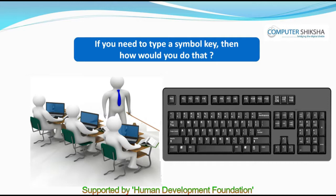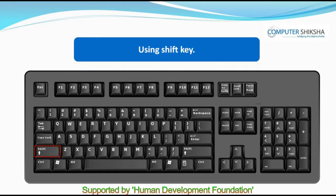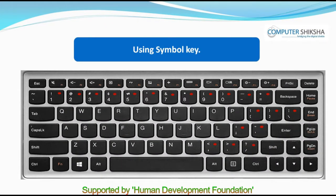If you need to type a symbol key, then how would you do that? If we need to type the symbol that we see on top of some of the keys, we need to press the Shift key, which is generally on both sides of the keyboard, with one hand and then press the required symbol key with the other hand. Note that if we simply press the key with symbols shown on top of it, what we will get on our page is the normal input of that key and not the symbol on top of it.